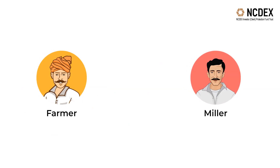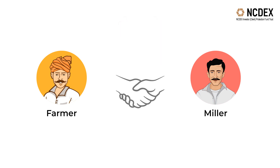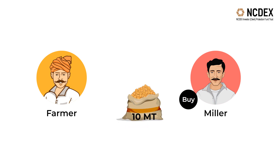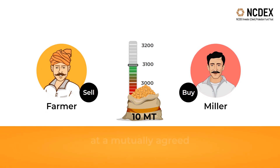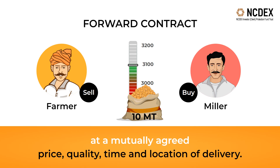Let's understand this with an example of two hedgers — a farmer and a Miller. The farmer's chana crop will be ready in about three months' time. The Miller also needs chana in three months' time to produce chana dal. In Scenario 1, the farmer and the Miller meet each other. The Miller agrees to buy 10 metric tons of chana from the farmer, and the farmer agrees to sell 10 metric tons of chana to the Miller at a mutually agreed price, quality, time, and location of delivery. This is a forward contract between the farmer and the Miller, tailor-made to suit their requirements.